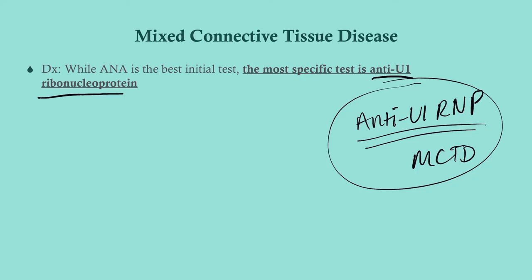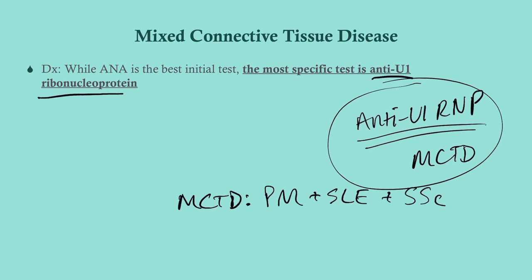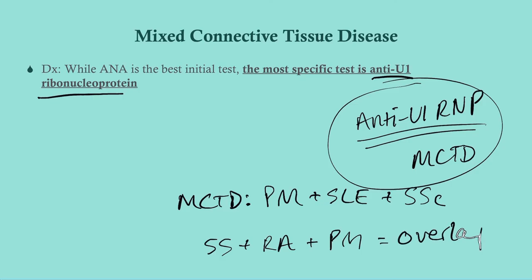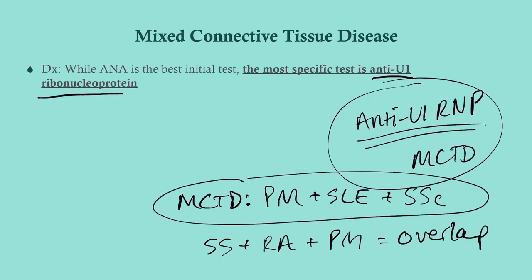There's also something called overlap syndrome or overlap connective tissue disease, which is distinct from MCTD. MCTD specifically takes features of polymyositis, lupus, and systemic sclerosis. However, it's possible to have features of, say, Sjogren's syndrome, rheumatoid arthritis, and polymyositis - that would be an overlap disorder where you may not fit all criteria for each but have symptoms from each. MCTD is specifically polymyositis combined with lupus and systemic sclerosis.